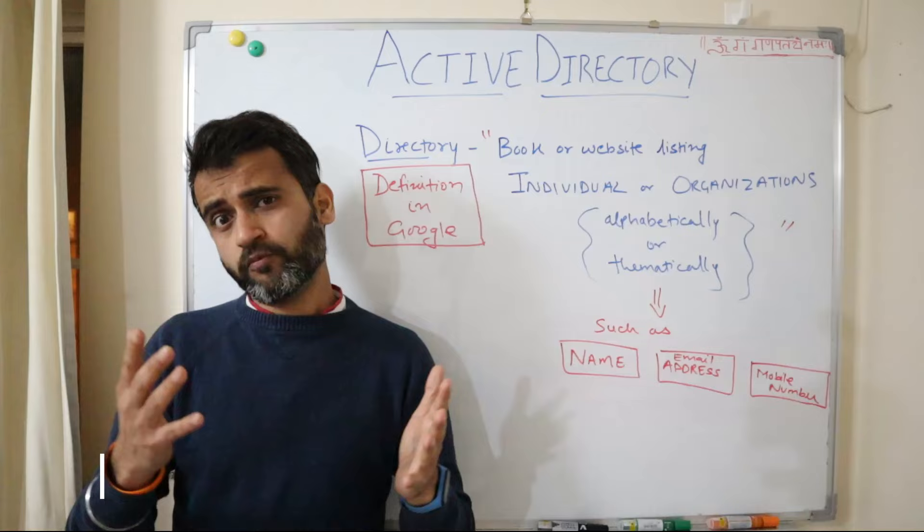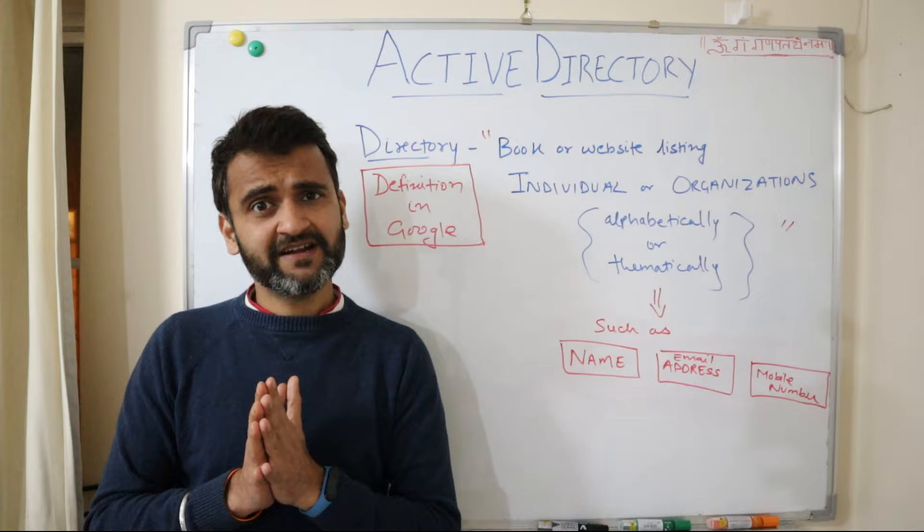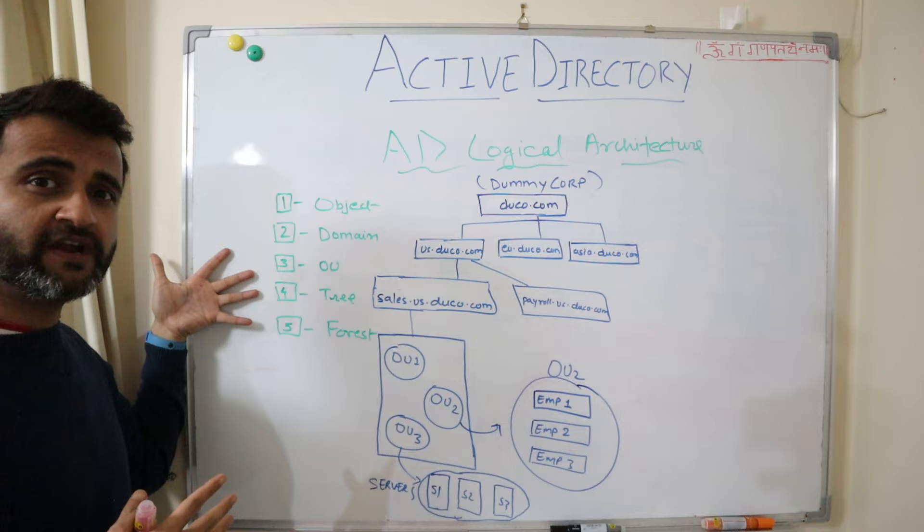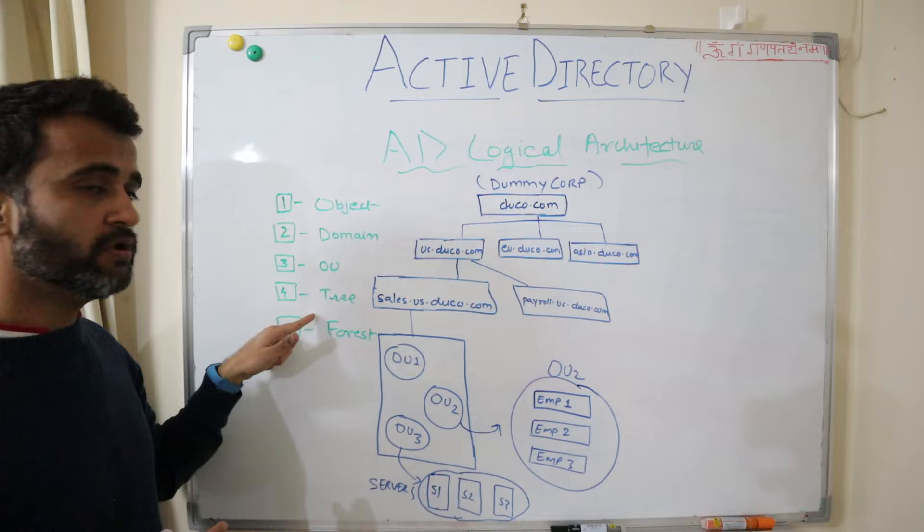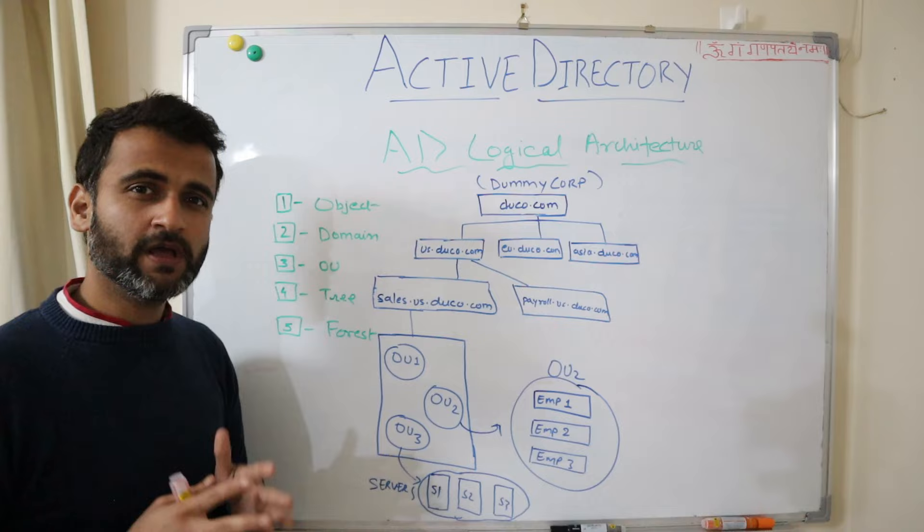Now let's understand those five building blocks or components on top of which Active Directory logical architecture is built, and we'll understand it with an easy example. These are the five core components of AD logical architecture: Object, Domain, OU, Tree, and Forest.